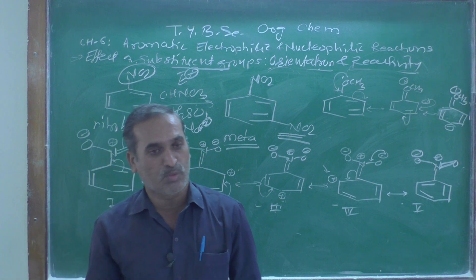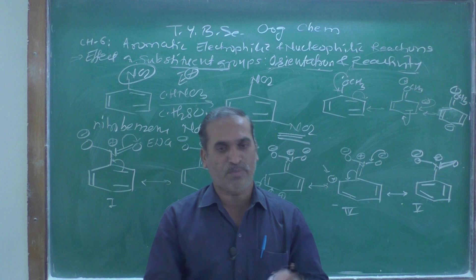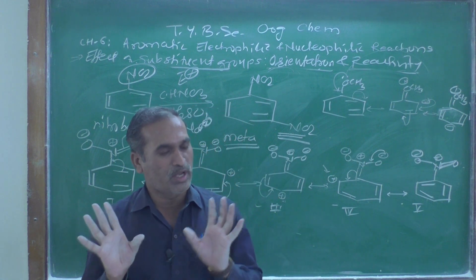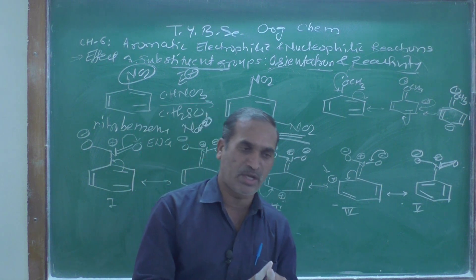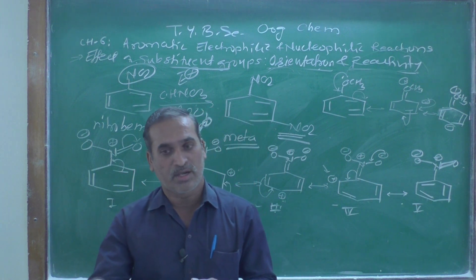Only two types of groups are present: one is electron donating and one is electron withdrawing. If electron donating groups are there, always remember they are ortho-para directors.